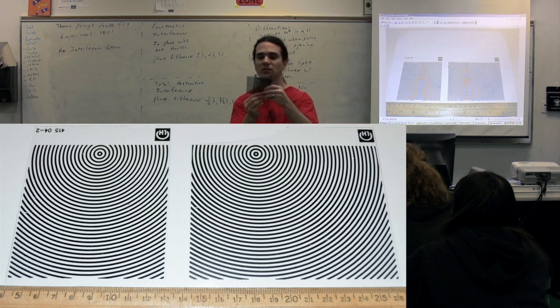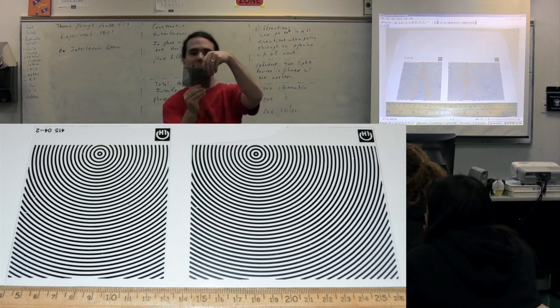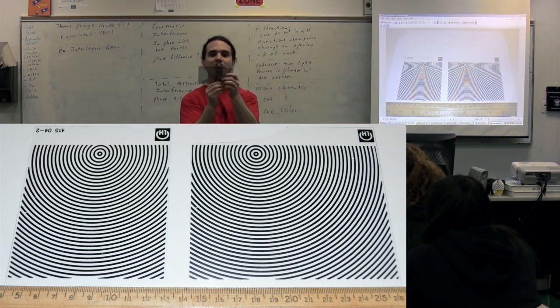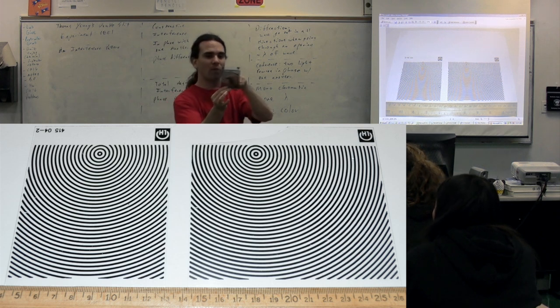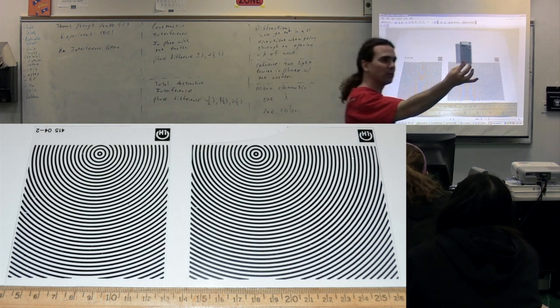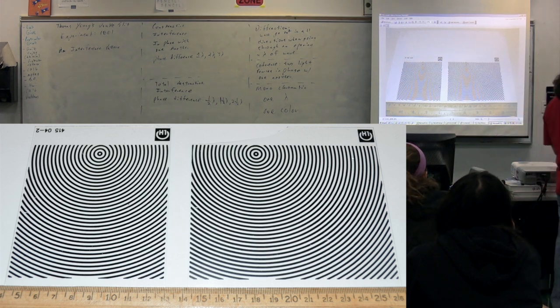Then we have the second of the two slits right here. And what you need to see is what happens when the two slits get close to one another and what happens with the interference pattern between the two sets of waves.